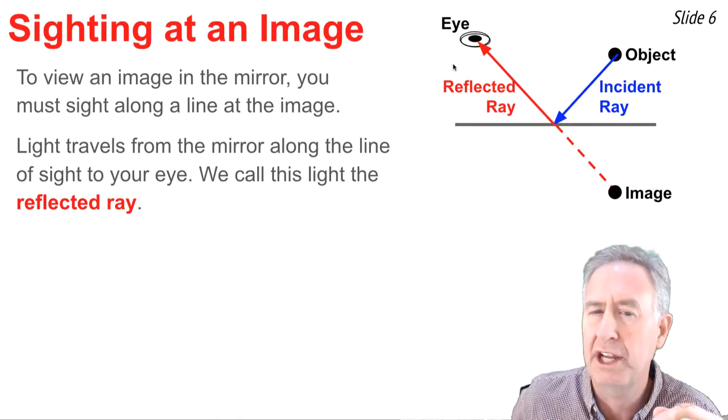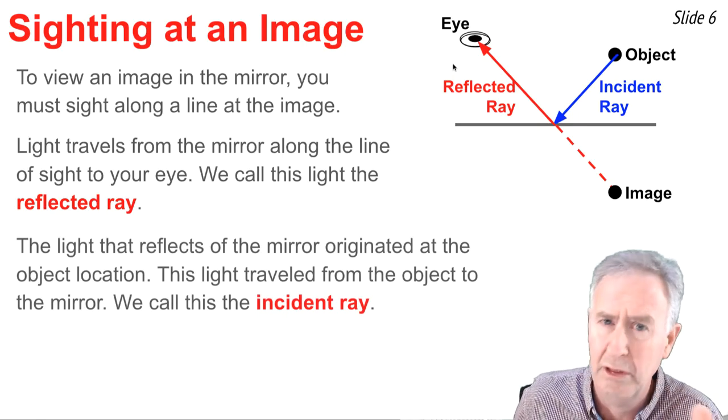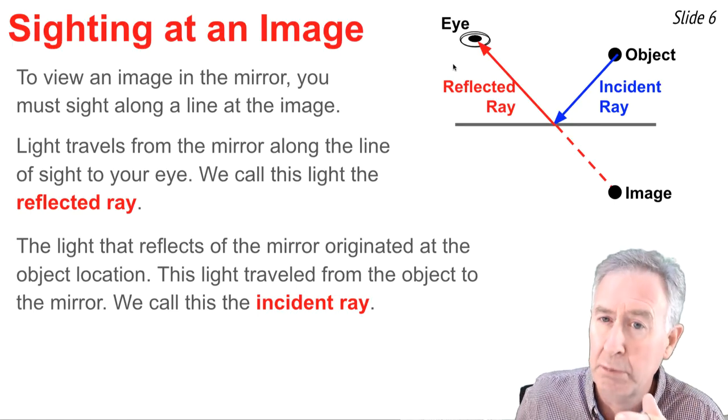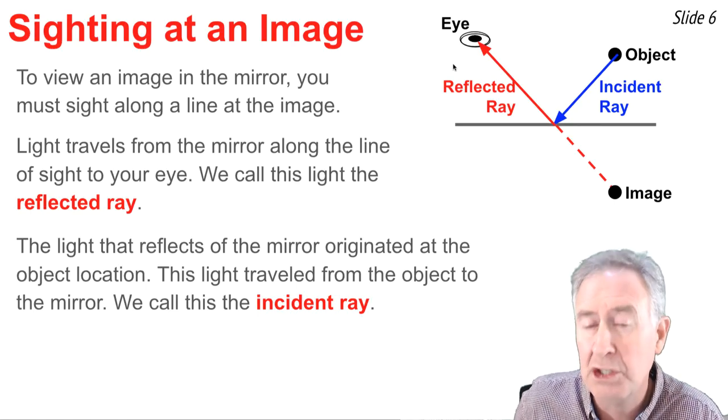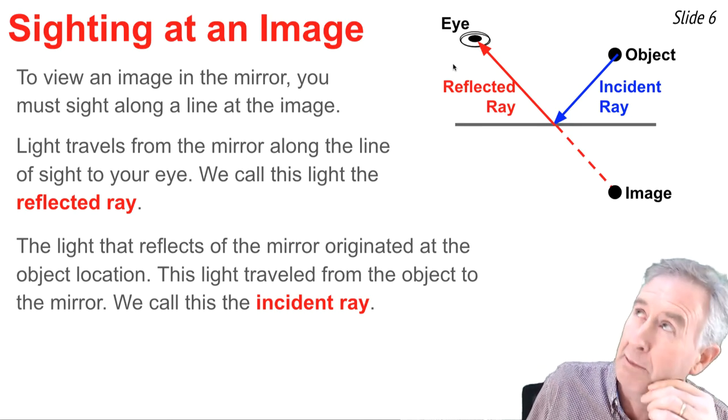Now this light originates at the object location. So you'll notice the blue arrowed line heading towards the mirror from the object. That's a ray of light that approaches the mirror and reaches the mirror at the intersection of your line of sight as you sight at the image.